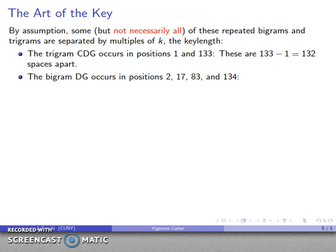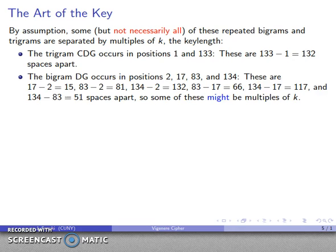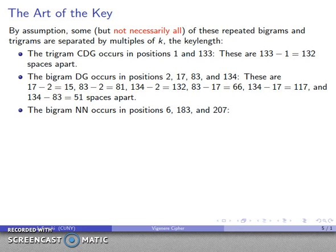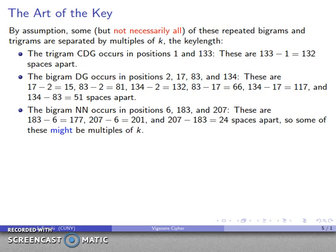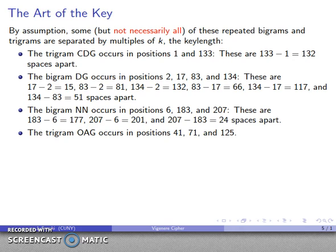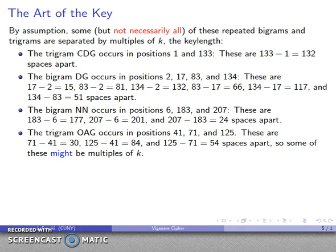Likewise, this bigram DG appears in positions 2, 17, 83, 134. The differences in position here are going to be 15 or 81 or 132, 66, and so on. Again, some, all, or none of these might be multiples of our key length. The bigram NN appears in a couple of positions, and the spacings here, the distance between the two locations, might be multiples of k. OAG likewise has different separations. These might be multiples of k.